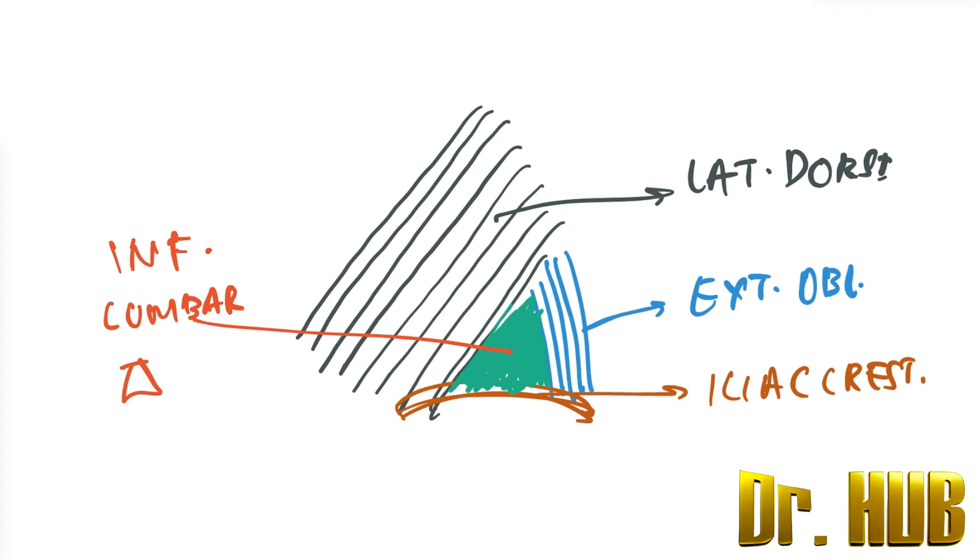Now let's go into the theory. So in terms of this lumbar triangle and the hernias, the acquired will be higher, so acquired is greater than that of the congenital. Secondly, the left side is greater than the right side.